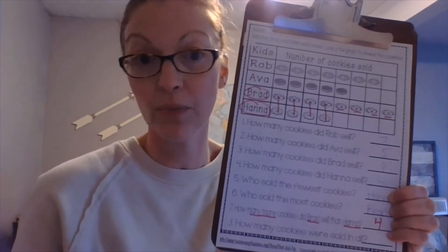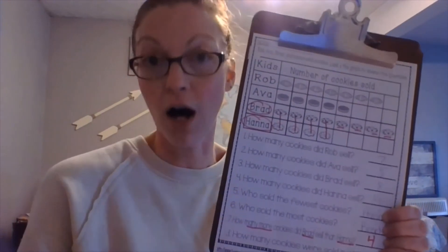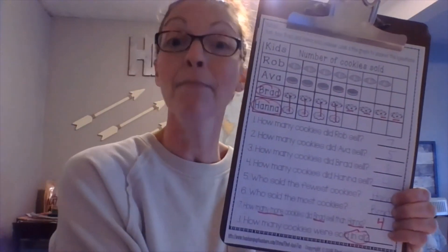Last question: how many cookies were sold in all? 'In all' is our key word — all together. So do we subtract or do we add? We add all of them together. So we could do seven plus five plus eight plus four.